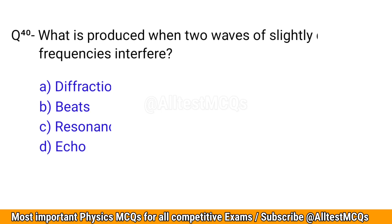Q40. What is produced when two waves of slightly different frequencies interfere? The correct option is B: Beats.